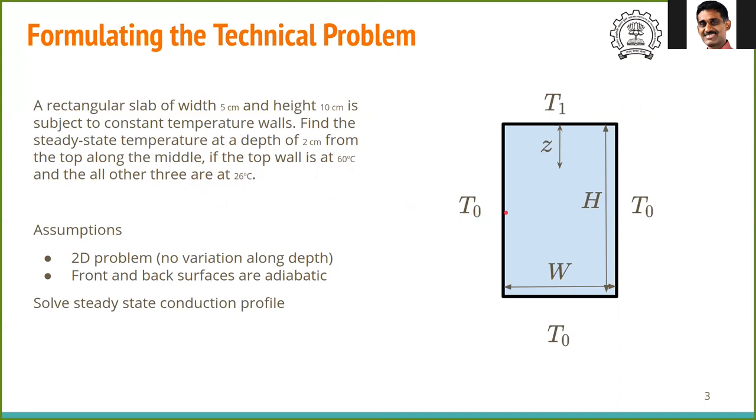The generic problem can be stated this way. We have a slab of height H and width W. Three walls are at temperature T₀ and the top wall is at T₁. Find the temperature at a depth of z from the top.